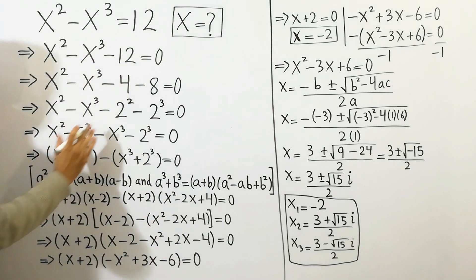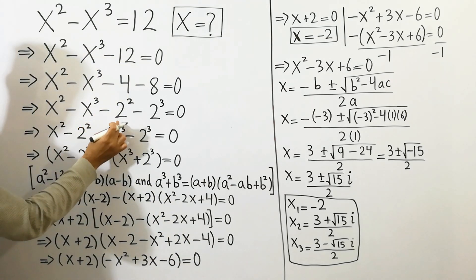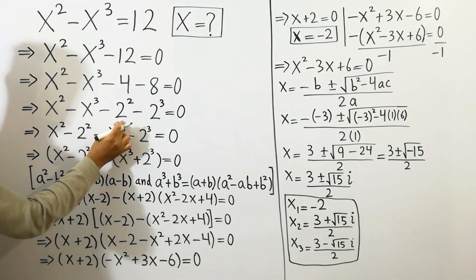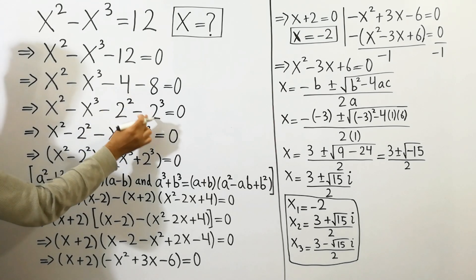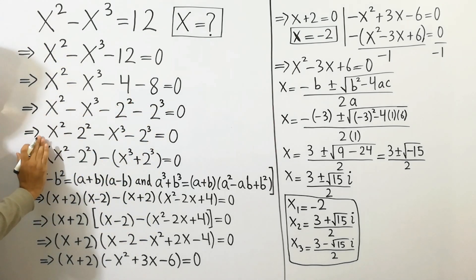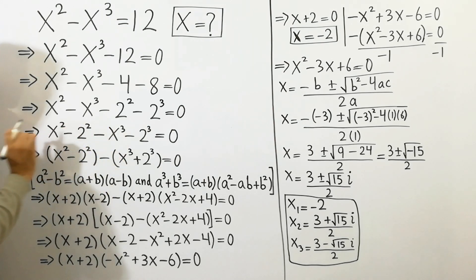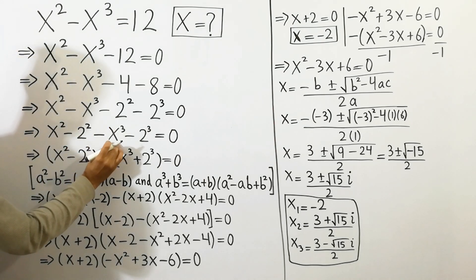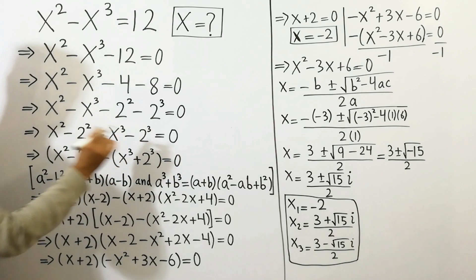By corresponding, we can write here 2 squared is equal to 4 and 2 cubed is equal to 8. So here, x squared minus 2 squared — separating equations — minus x cubed minus 2 cubed is equal to 0.